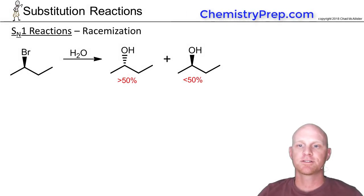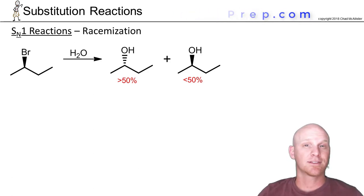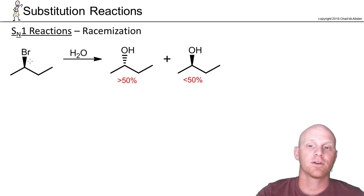So now we want to take a look at the stereochemical consequence of doing an SN1 reaction. We saw with SN2 reactions doing backside attack resulted in inversion. That is not going to be the case here in SN1.